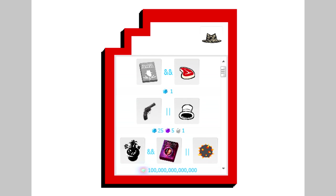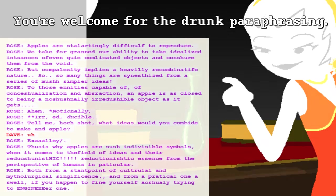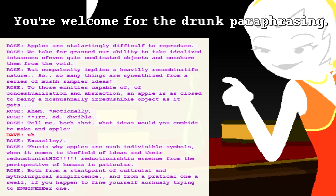To begin to understand this, let's look at a conversation Rose has with Dave in Act 6, where she tries to explain why creating apple juice was so much harder than it sounds. 'Apples are startlingly difficult to reproduce. We take for granted our ability to conjure idealized instances of even quite complicated objects from the void. But complexity implies a heavily combinant nature — so many things are synthesized from a series of much simpler ideas. To those entities capable of conceptualization and abstraction, an apple is as close to being a notionally irreducible object as it gets. Tell me, Hotshot, what ideas would you combine to make an apple?'